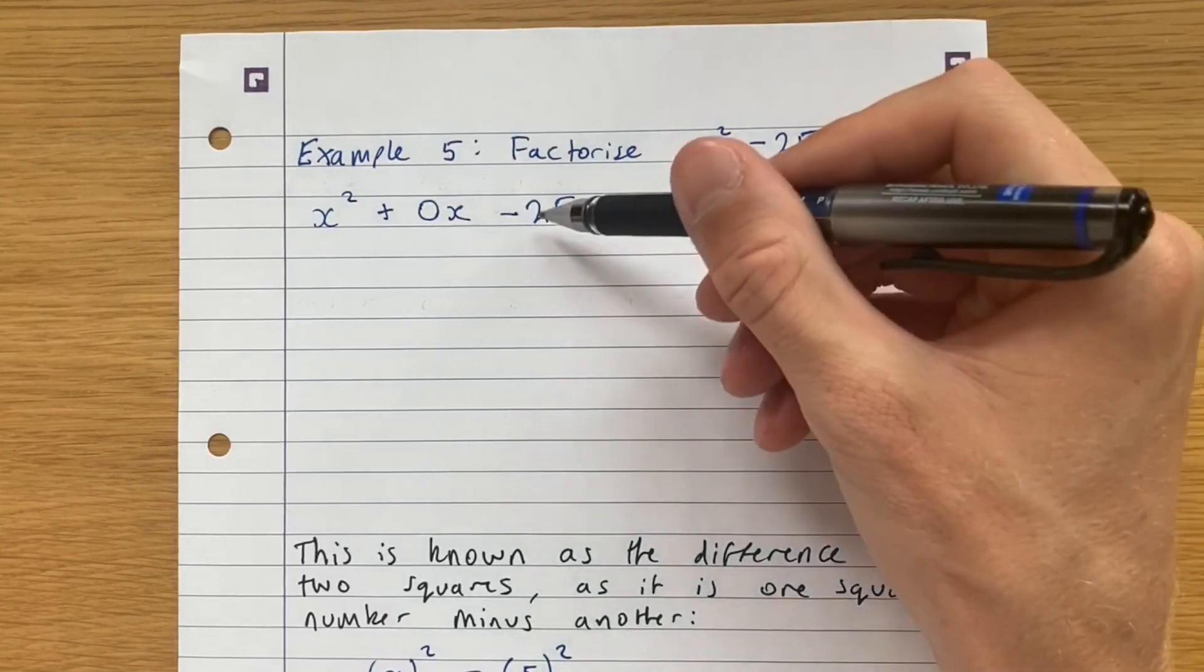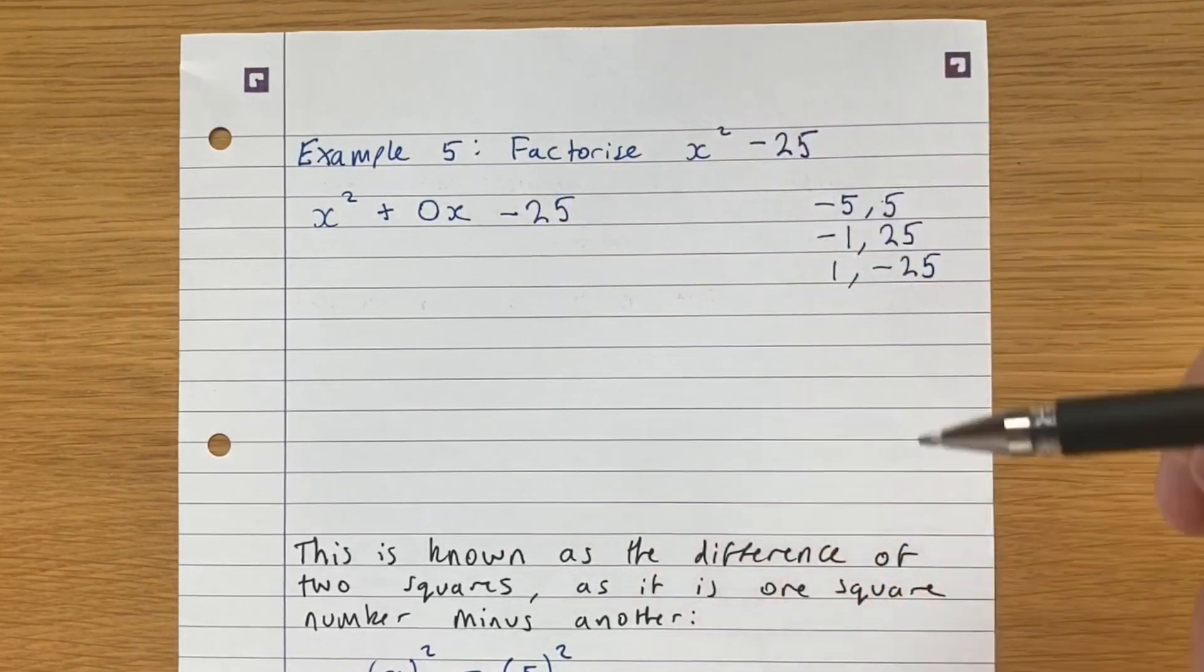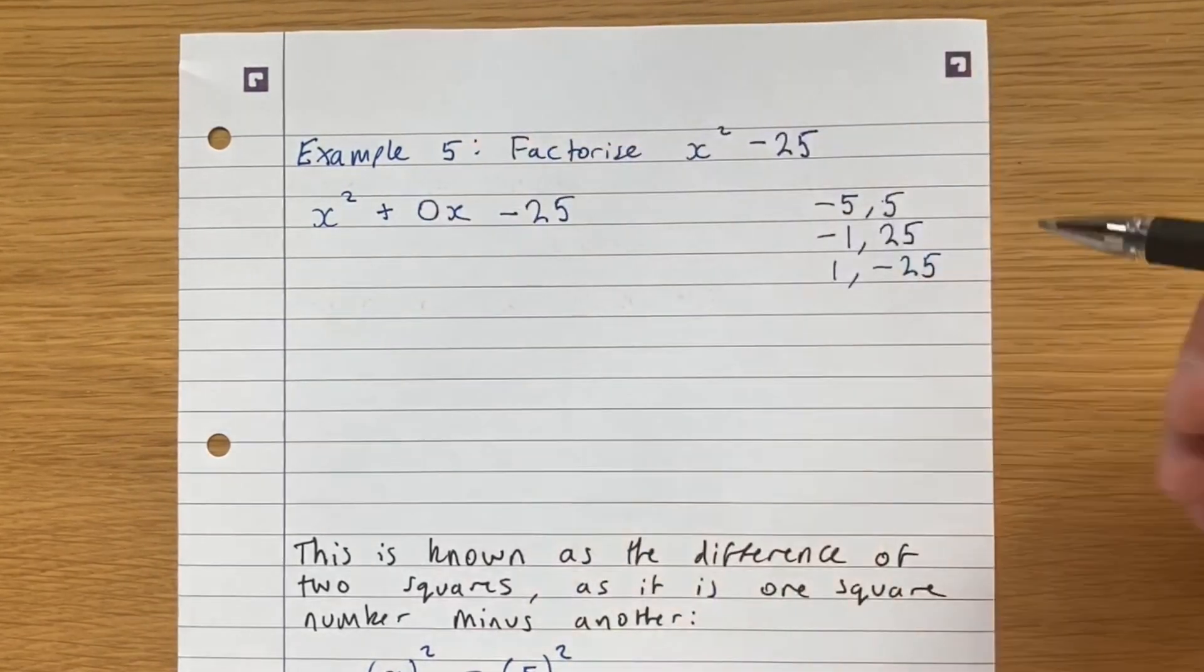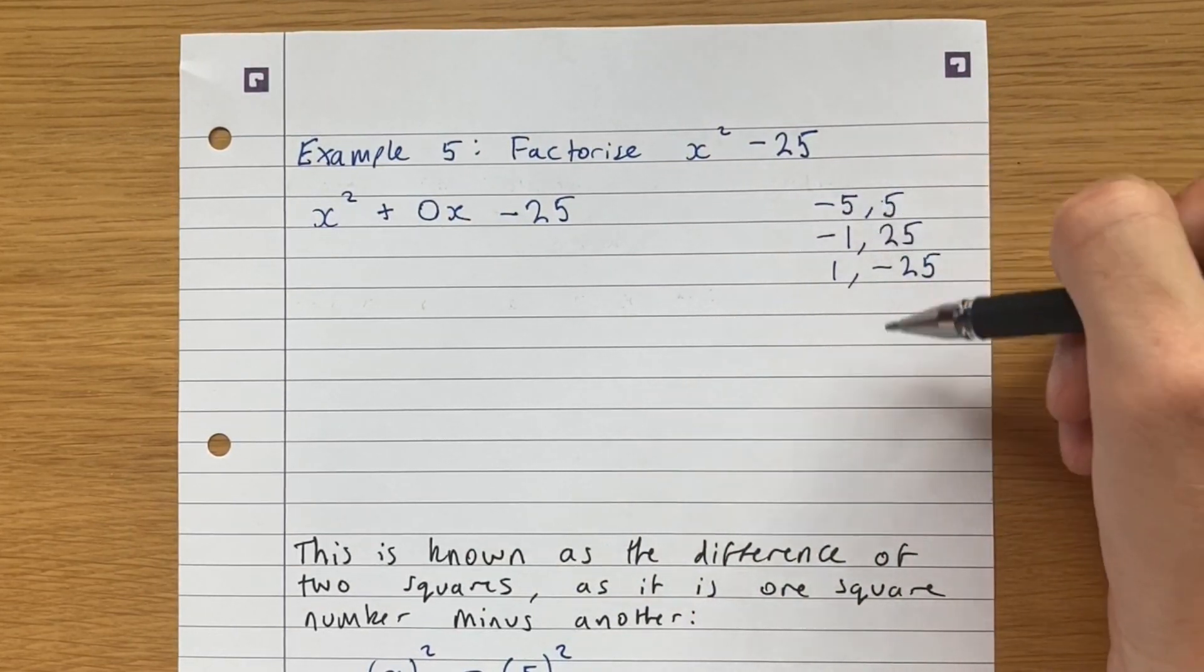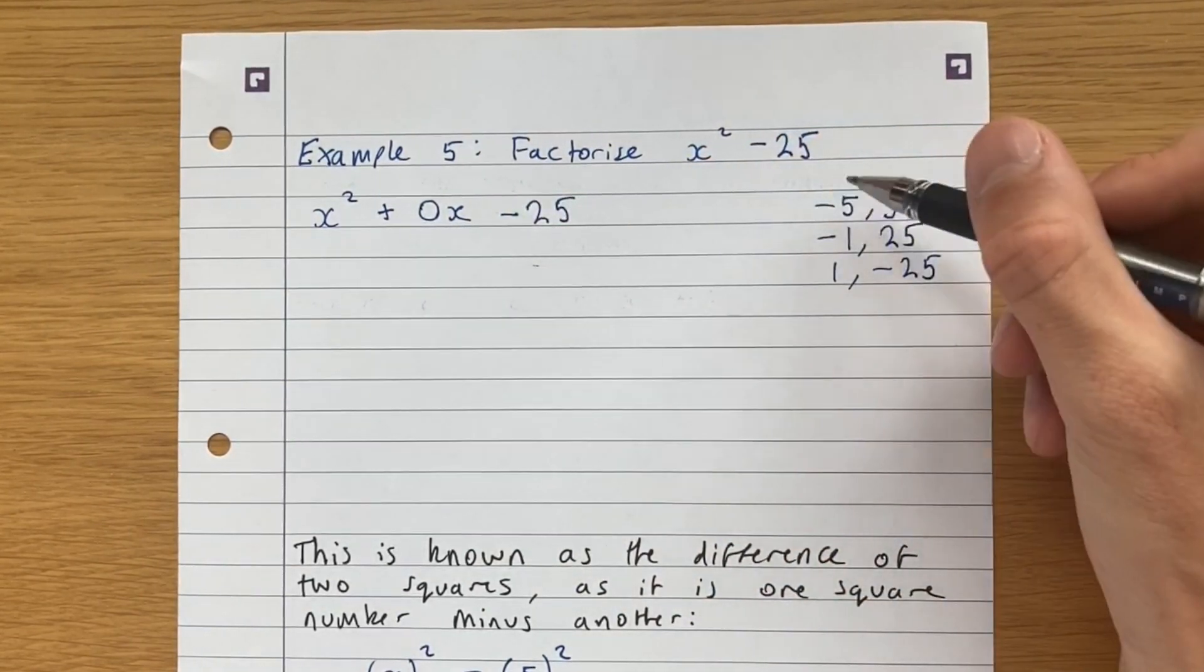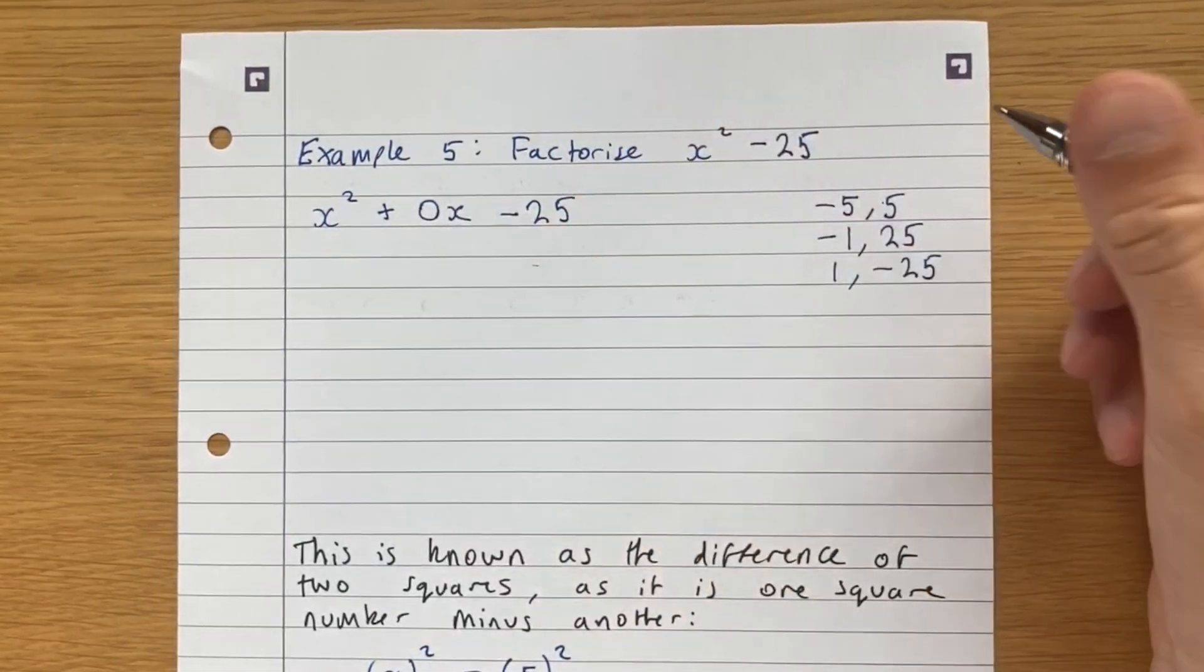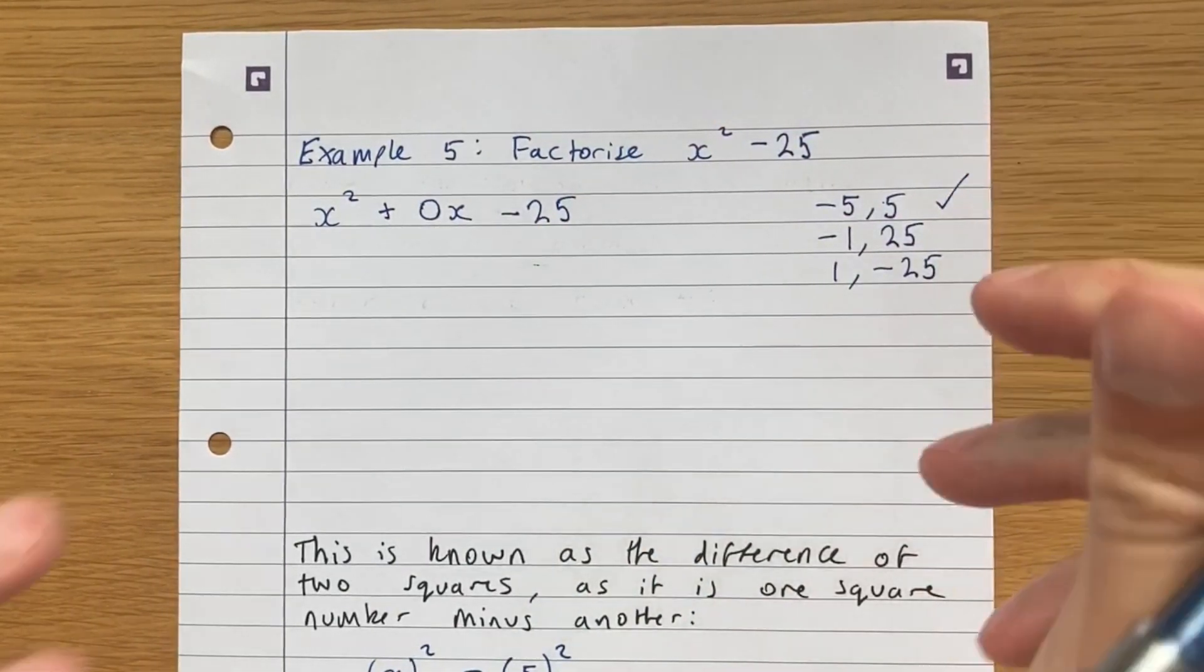Well, 1 times minus 25 is minus 25, so it satisfies that. But 1 minus 25 is not 0. The same is true here. However, here, we have that minus 5 times 5 is minus 25. And minus 5 plus 5 is 0. So this is the one that satisfies our conditions.